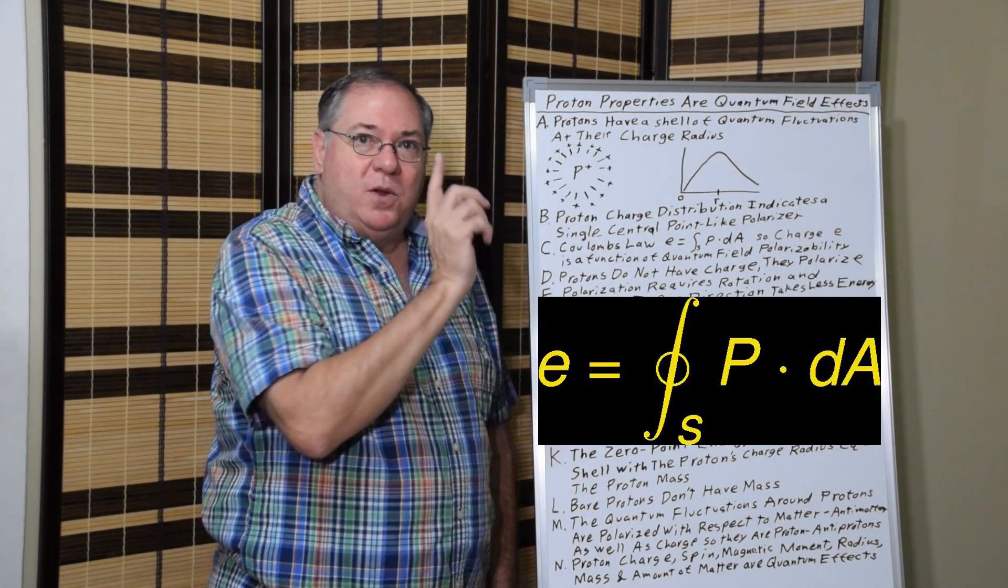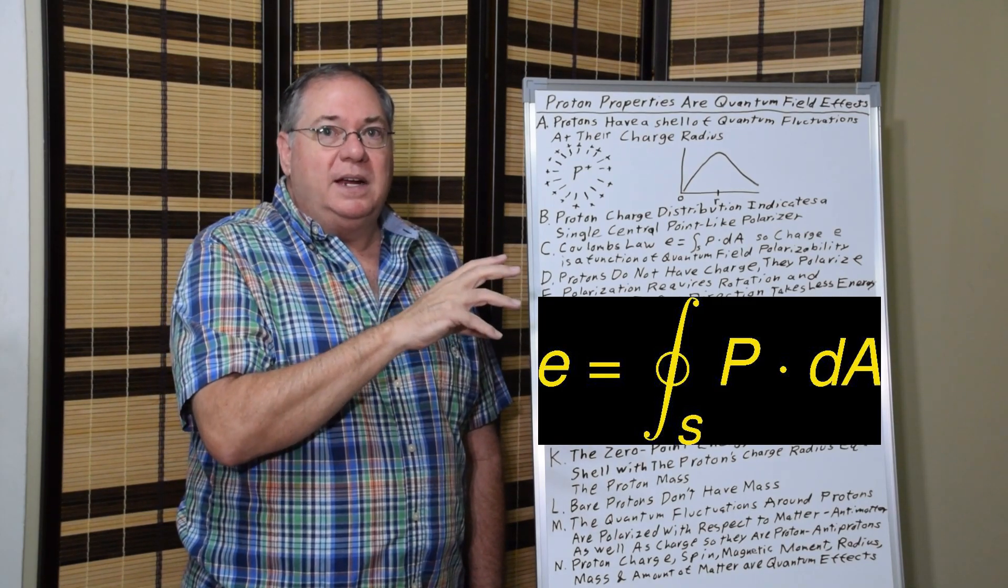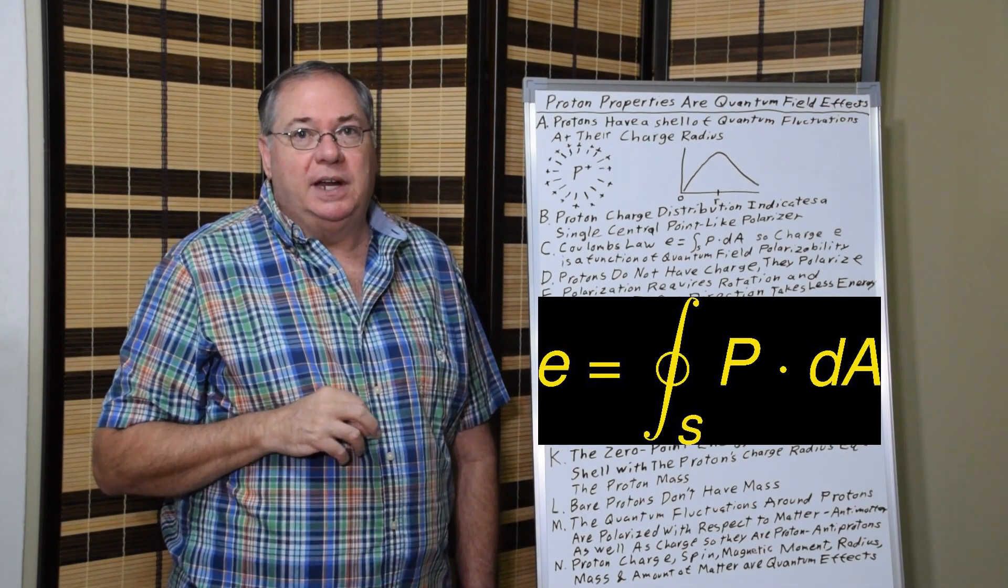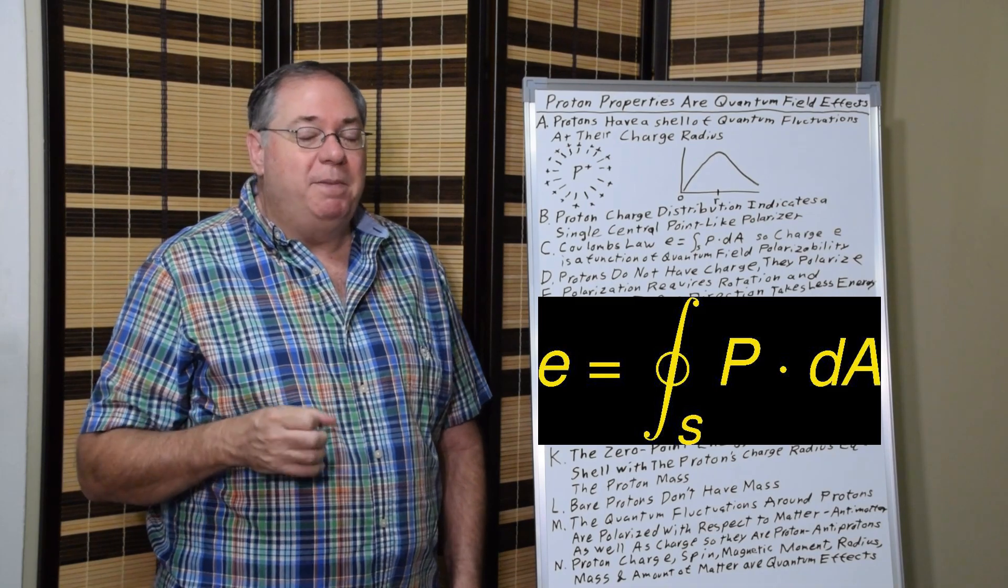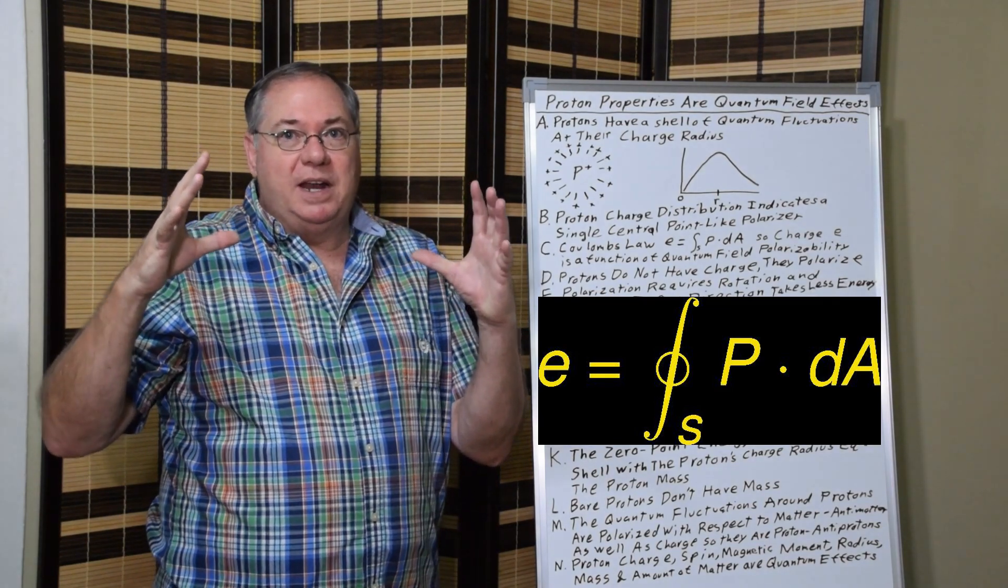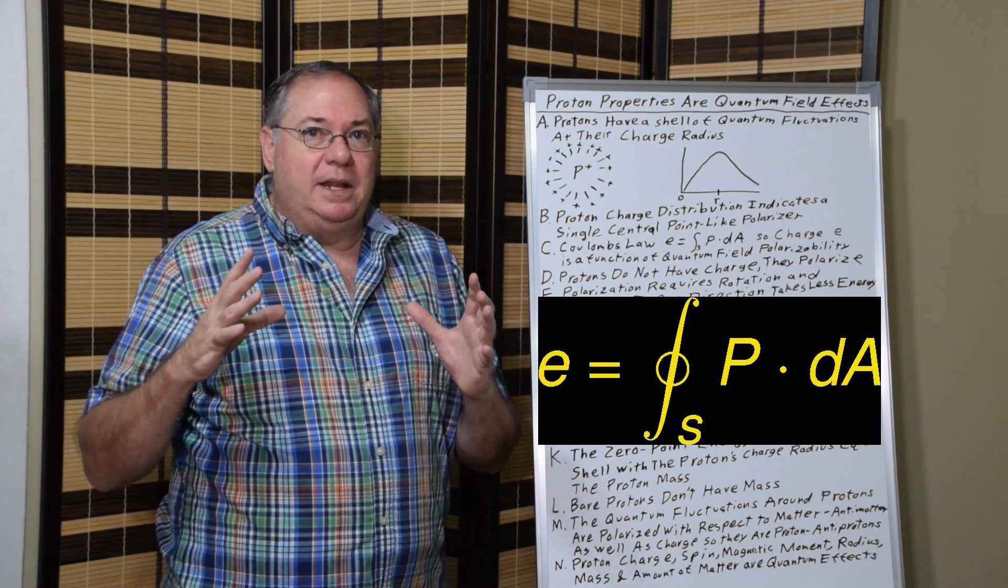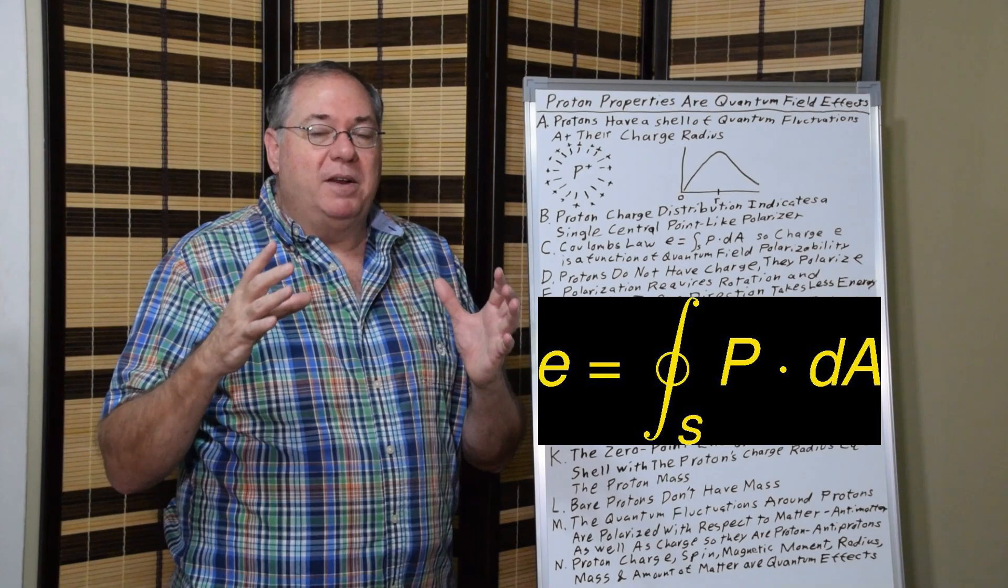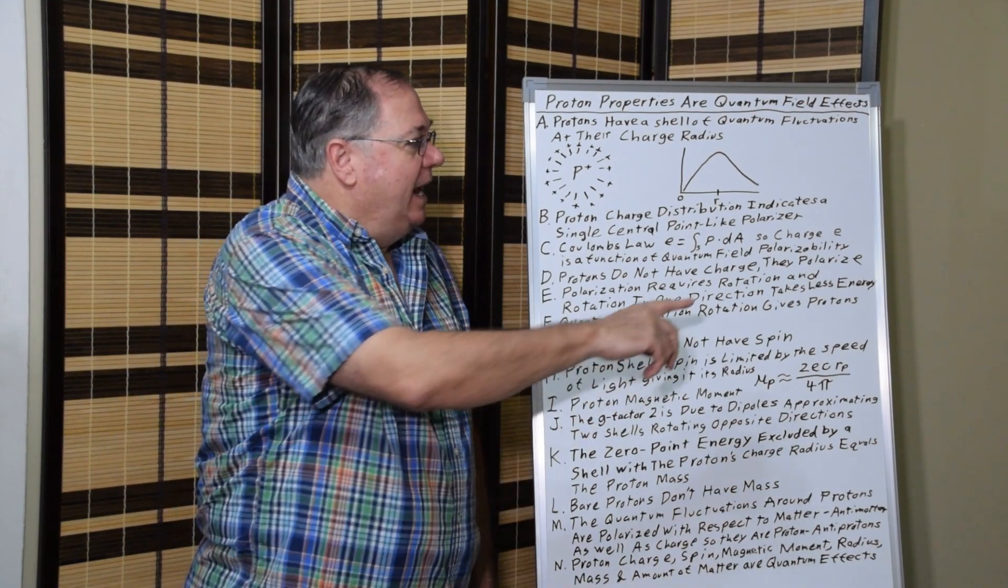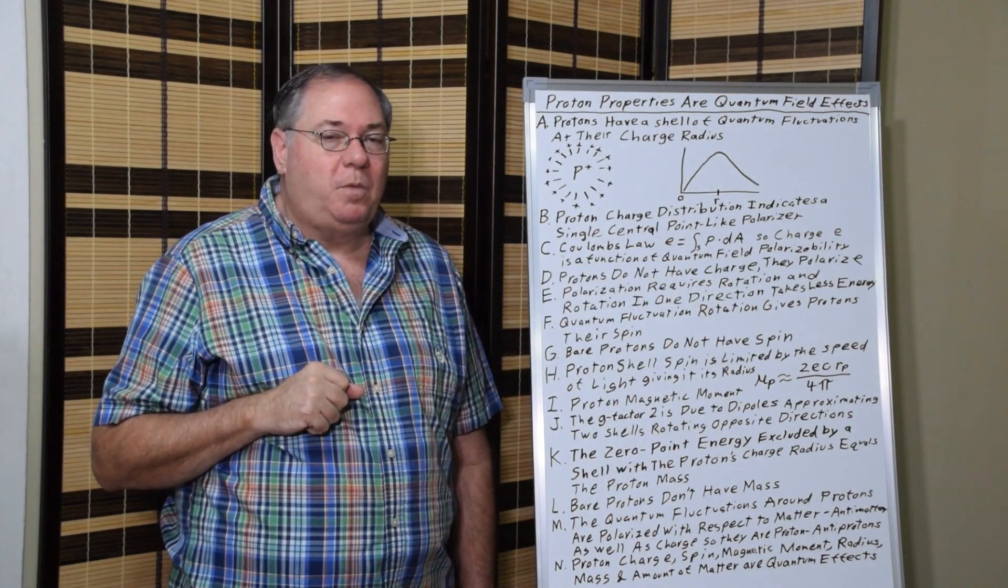Now if we look at Coulomb's law, where we have the charge is the surface integral of the flux of polarization dot dA, the surface area of the surface around the charge. So you basically have a charge in the middle with the amount of charge, and then you have an area around it. And any area around it you choose, in order for it to obey the inverse square law, has to give you the same amount of charge inside. Well, this has been interpreted normally as the flux of polarization depends on the amount of charge.